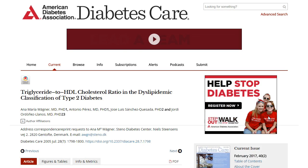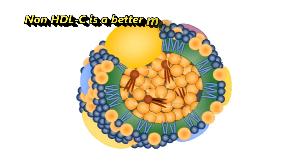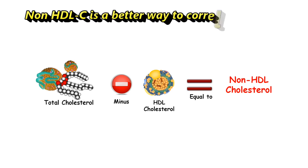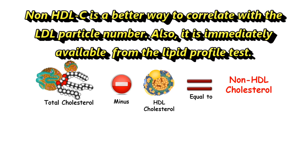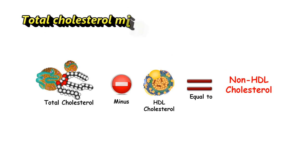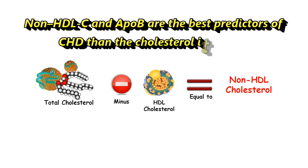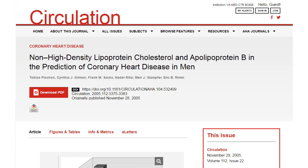Reference: "Triglyceride to HDL cholesterol ratio in the dyslipidemic classification of type 2 diabetes," published in Diabetes Care, 2005. Non-HDL-C is a better marker of cardiovascular risk than LDL-C and better correlates with LDL particle number; it is also immediately available from the lipid profile test. Non-HDL-C = TC − HDL-C. Non-HDL-C and ApoB are the best predictors of coronary heart disease. Reference: "Non-high-density lipoprotein cholesterol and apolipoprotein B in the prediction of coronary heart disease in men," published in Circulation, 2005.